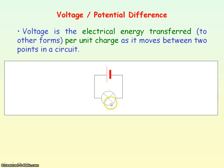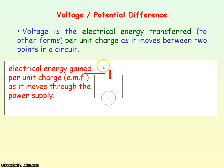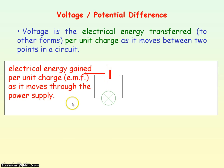If we consider this circuit where you have a cell connected to a light bulb, the cell is providing what we call an EMF — electromotive force — which is a voltage or potential difference, as it is giving each unit charge electrical energy. This voltage represents the electrical energy gained per unit charge as it moves through the power supply, and the energy transformation taking place in the cell is from chemical energy to electrical energy.